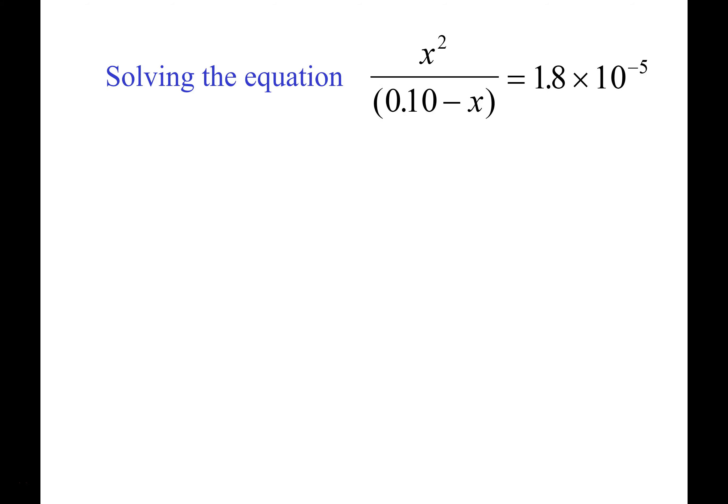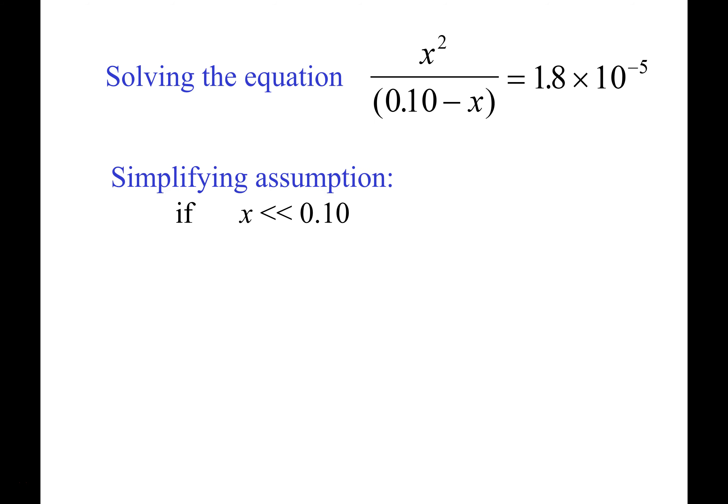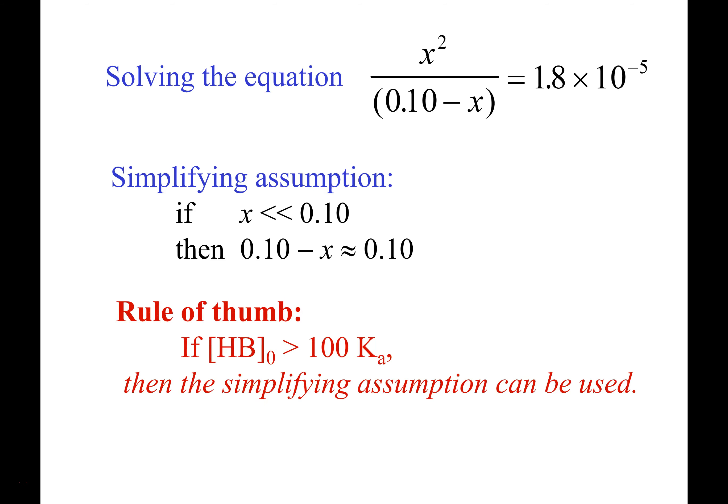The simplifying assumption says that X is significantly less than 0.10 — the molar concentration of our weak acid. If X, the amount that ionizes, is a lot less than this, then X in the denominator essentially goes away. So 0.10 minus X simply becomes 0.10. That makes our Ka expression simply X² / 0.10 = 1.8×10⁻⁵. There's a general rule of thumb: if your weak acid molar concentration is greater than 100 times your Ka, the simplifying assumption works.